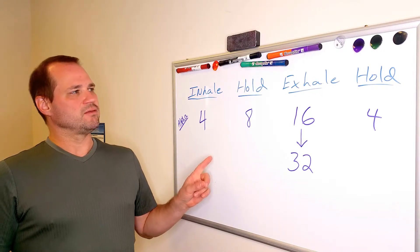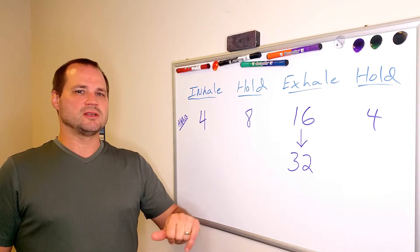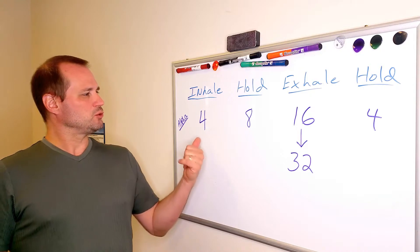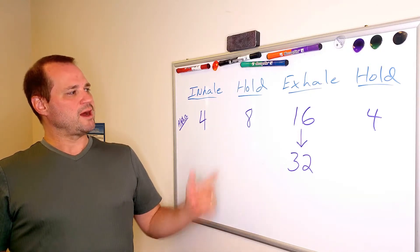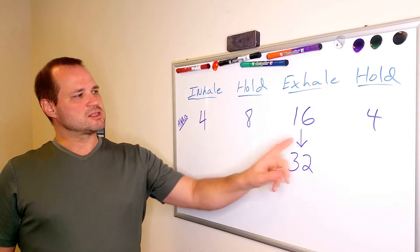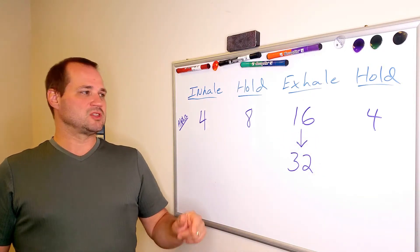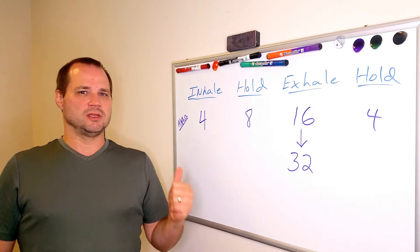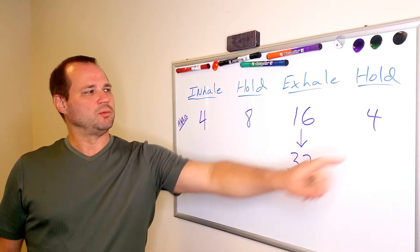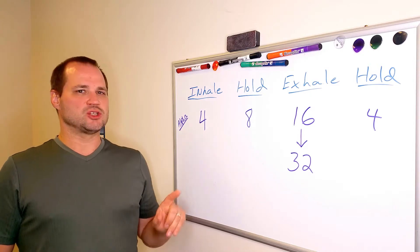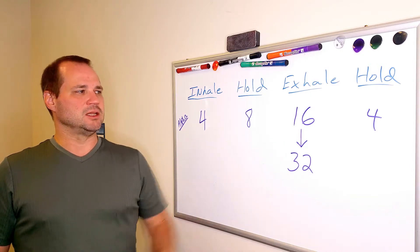You'll notice a slight difference between this third exercise and the second exercise. We drop the inhalation down to a four count. We keep the hold after the inhalation at an eight. This time we're going to extend the exhalation to 16, double what it was in part two, and the hold will be the same. So we've essentially changed two things: the inhalation length and the exhalation length.